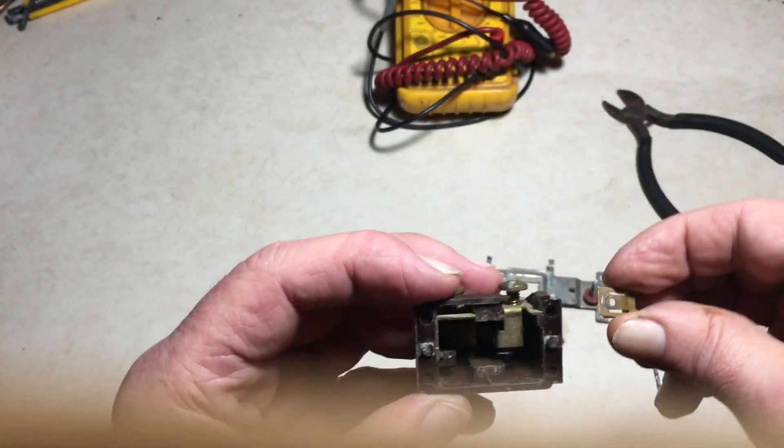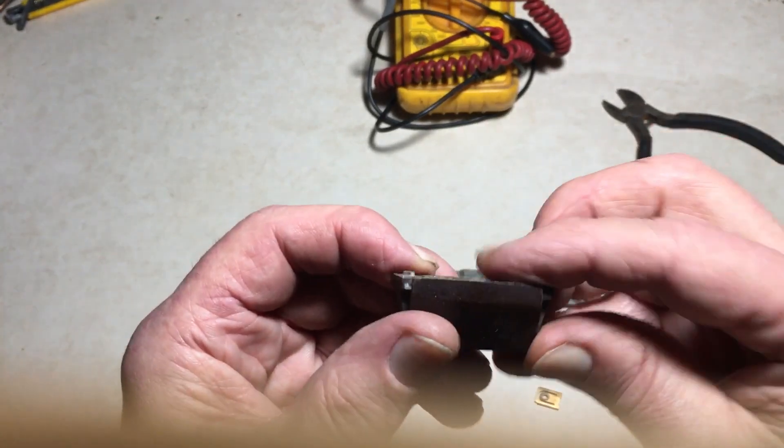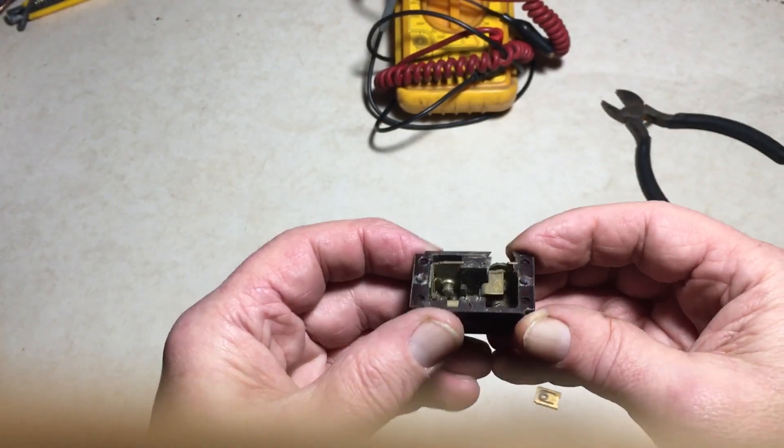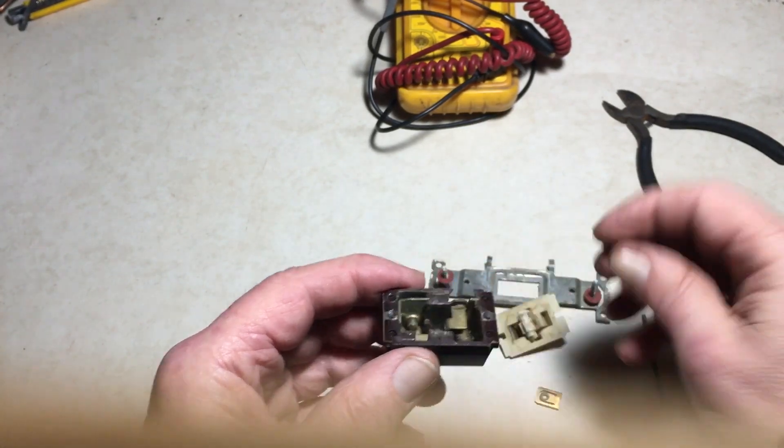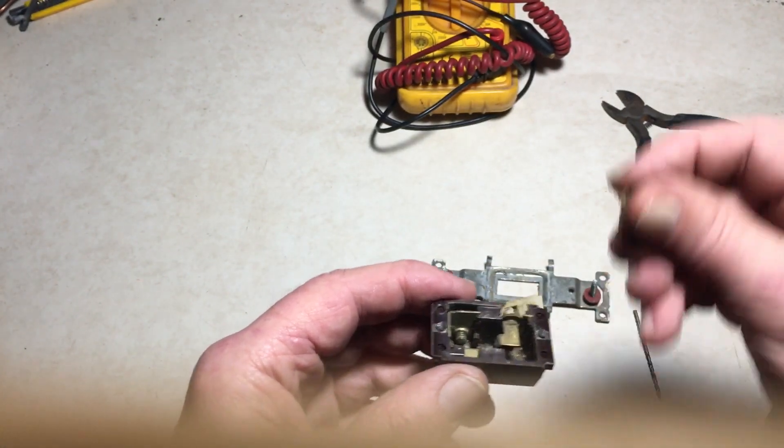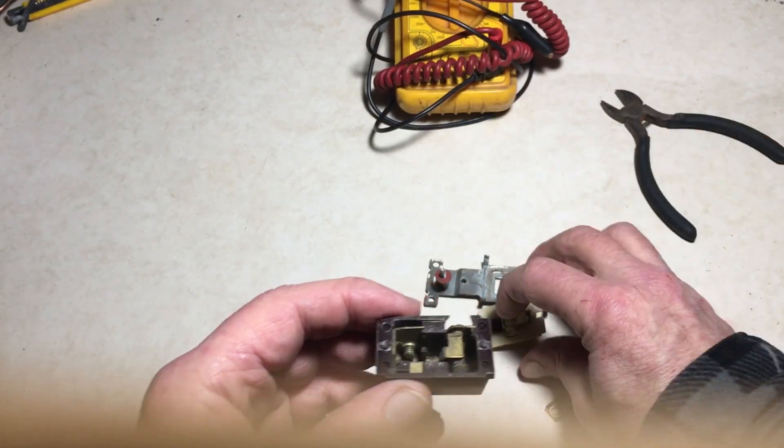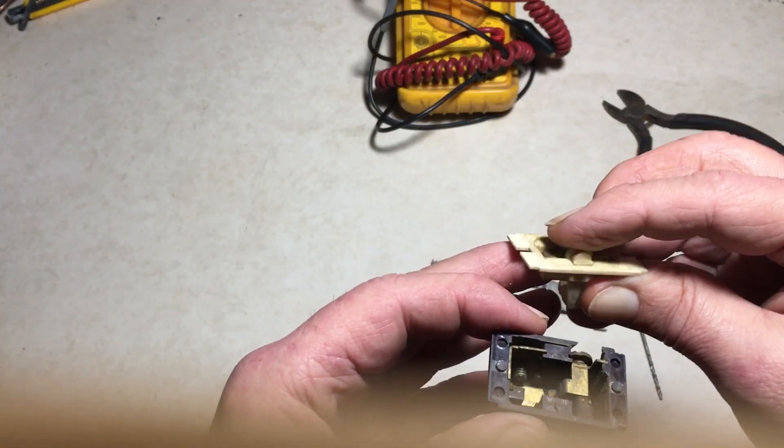Anyway, just curiosity. Thought you might want to see what's inside one of these switches. Not a whole lot to it - a couple of brass contacts where you screw your wire onto, and that little rocker piece inside. It just goes back and forth when you rock the switch back and forth.